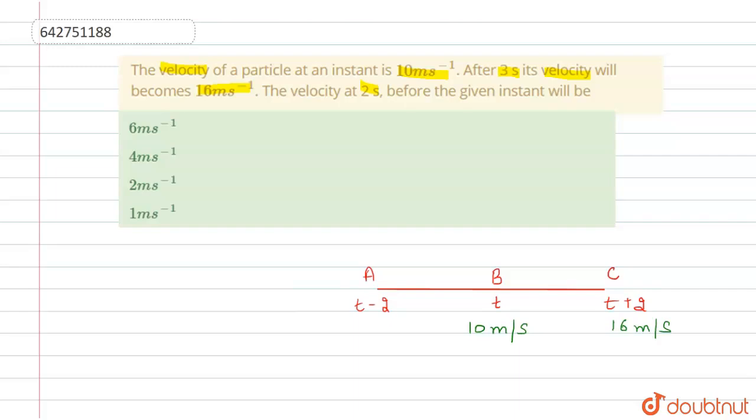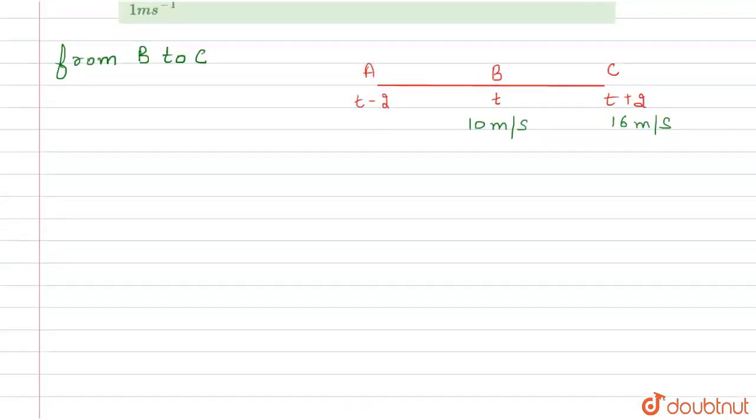First of all, we apply the first equation of motion from B to C. We write v equals u plus at. This is 16 equals 10 plus a times 3.